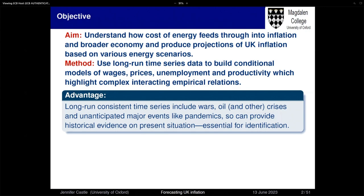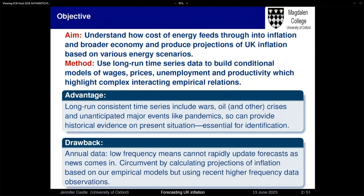The big advantage of using this long-run time series is the past variation we can use. But there's a drawback: this is going to be annual data, and that's not very helpful when forecasting inflation in the current climate. So what we're going to do is use higher-frequency data to update our forecasts based on the annual projections we produce.